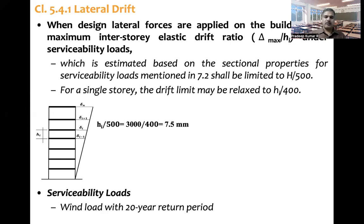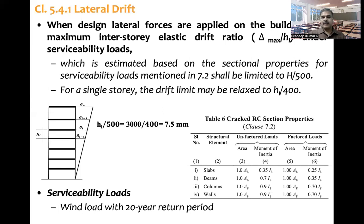Regarding serviceability loads: under wind, the serviceability load is the wind load with a 20-year return period. The drift is estimated based on sectional properties given in Table 6 and clause 7.2. That table provides area and moment of inertia values for slabs, beams, columns, and walls — separately for unfactored loads and factored loads. Unfactored loads correspond to serviceability loads, and factored loads correspond to design or ultimate loads.